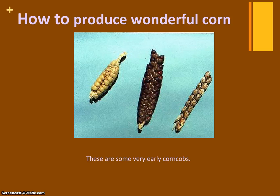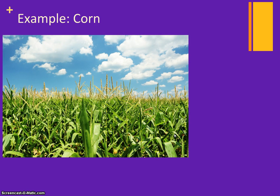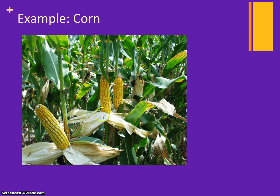Here's how to produce wonderful corn. Here are some very early corn cobs — our corn today doesn't look like these. Here's how corn grows in a cornfield: this is a stalk of corn, and each corn stalk will produce one ear of corn. You can see the ear of corn on the corn stalk. Here's the corn still in its husk, and this is with the husk sort of pulled back and pulled away.